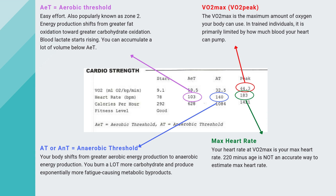If you look at the bottom left, we have the anaerobic threshold, otherwise commonly known as the lactate threshold. Here, your body shifts from greater aerobic energy production to greater anaerobic energy production. You burn a lot more carbohydrate, and you start to produce a lot of metabolic byproducts that cause more fatigue. So if you're exercising hard above this intensity, you will start to get exponentially increasing fatigue as well.